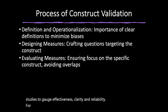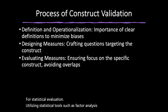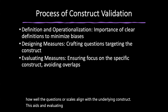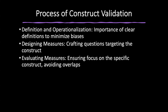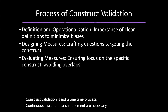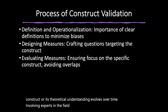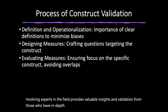For statistical evaluation, tools such as factor analysis help understand how well the questions or scales align with the underlying construct, aiding in evaluating both convergent and discriminant validity. Construct validation is not a one-time process — continuous evaluation and refinement are necessary, especially if the construct or its theoretical understanding evolves over time. Involving experts in the field and submitting measures for peer review further ensures validity and provides feedback for refinement.